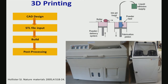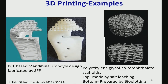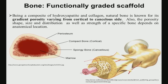In 3D printing, you start with a CAD design, make the STL file as input, and have a build piston and post-processing stage. Examples include a polycaprolactone-based mandibular condyle design fabricated by solid freeform fabrication (SFF), and PEG (polyethylene glycol) based scaffolds prepared by bio-plotting.